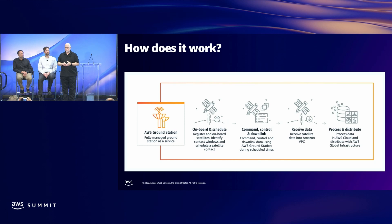These are the building blocks of AWS Ground Station. In the upcoming sections, we'll cover the control plane, which is used in onboarding and contact scheduling, and the data plane, which is used in delivering data. Then you build your processing and distribution portion — basically what you want to use that data to do and who you want to deliver it to.